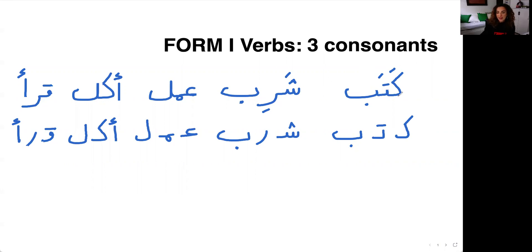The root is the kaf, the ta, and the ba. Sharib — in Levantine Arabic. The three-letter root is the sheen, the ra, and the ba. Amal, which is 'to do' — the three-letter root is the ayn, the meem, and the laam. Akal — the three-letter root is the hamza, the kaf, and the laam.